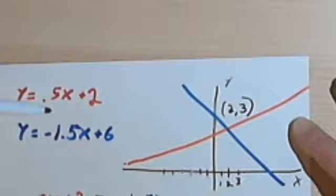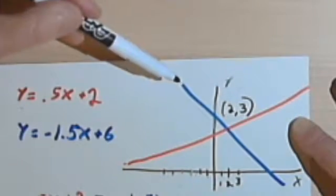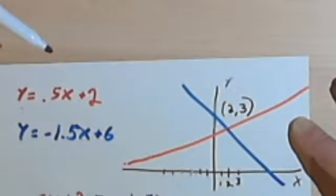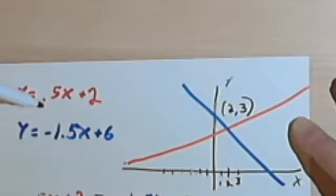Now you could do it algebraically, but since we're given a graph, when you have a graph of a system of equations, all you have to do is find the point of intersection—in this case 2,3—and that's going to tell you what the solution is.